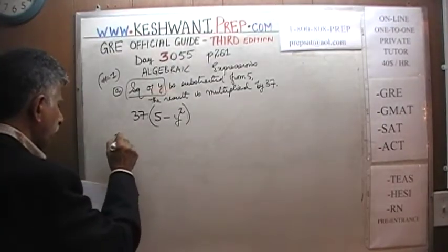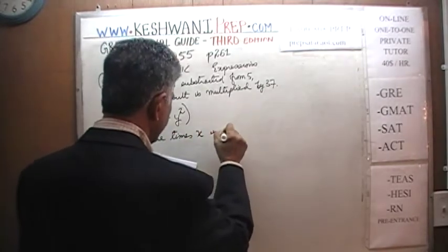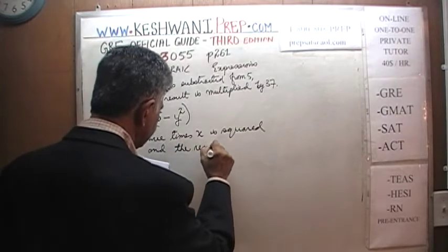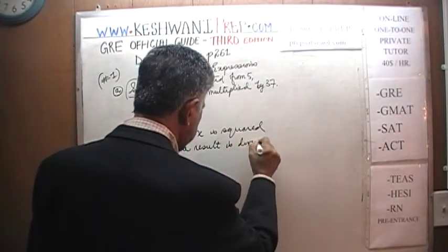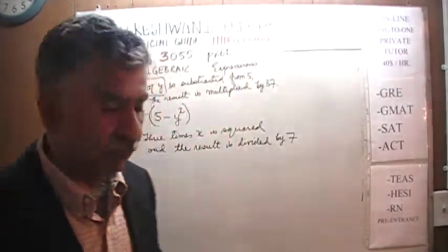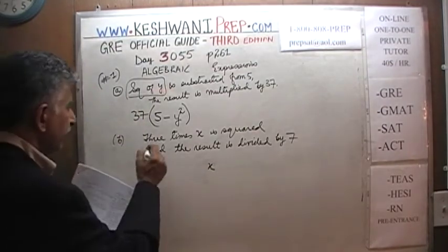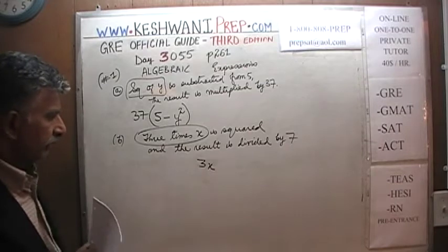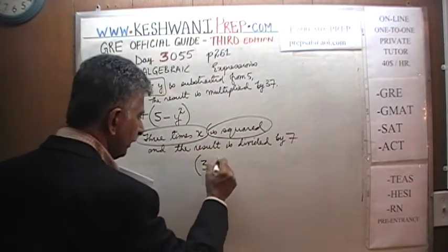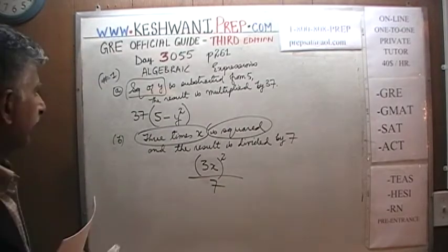Let's look at part B. It says three times x is squared, and the result is divided by 7. We don't want x by itself — we want three times x. So we take the quantity 3x and square the whole quantity: (3x)². Then that result is divided by seven: (3x)² / 7. That's part B.